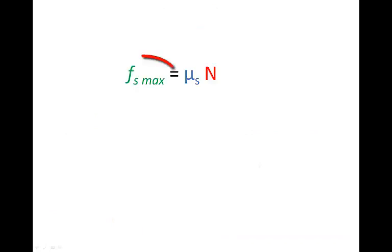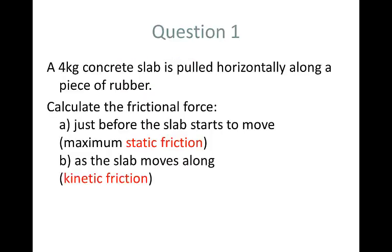We've seen that we can calculate Fs max by multiplying the coefficient of static friction for the two materials that are touching one another by the normal force exerted by the surface on the object resting on it, and we can calculate kinetic friction by multiplying coefficient of kinetic friction by normal force. Let's do some examples.